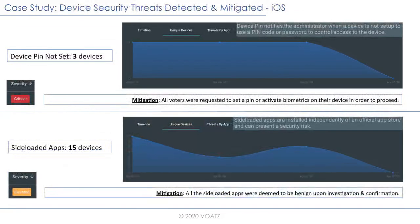Looking at device-level threats on iOS: we detected a few devices where the PIN was not set. The mitigation was to force users to set a PIN or activate biometrics on the device before they could proceed. We also saw a few cases of sideloaded apps — in each case, due diligence confirmed they were legitimate apps and the voters were able to proceed. But detecting them is important in case they could pose a threat, and it's something we'd like to research more.